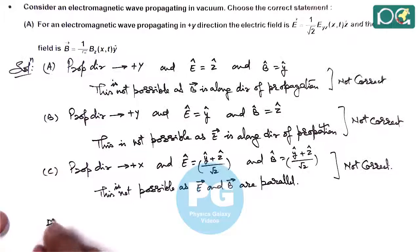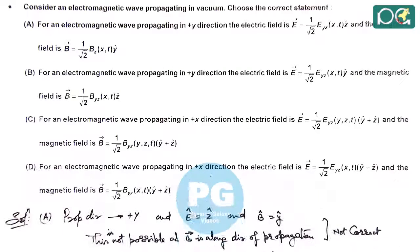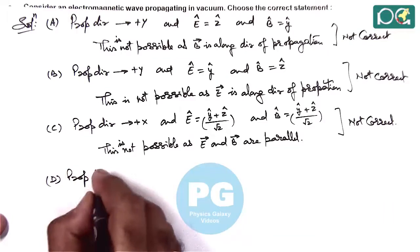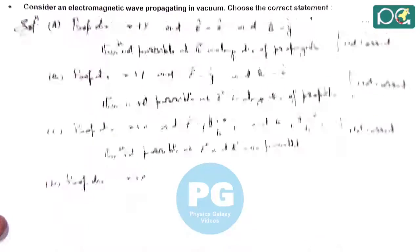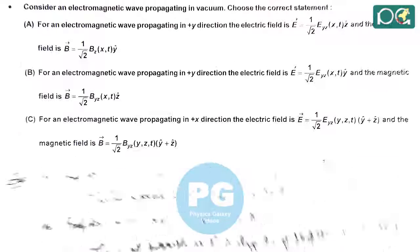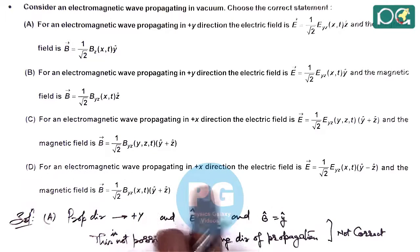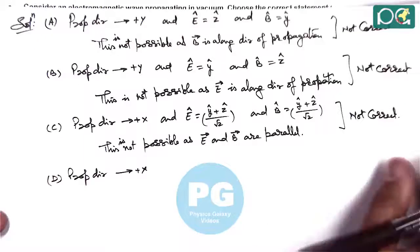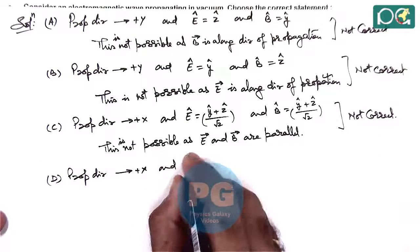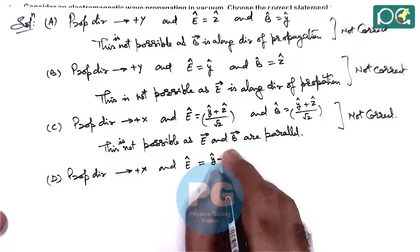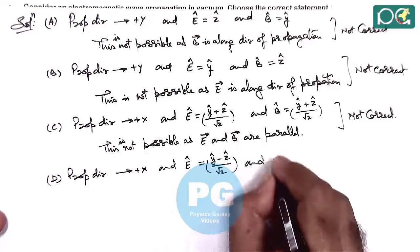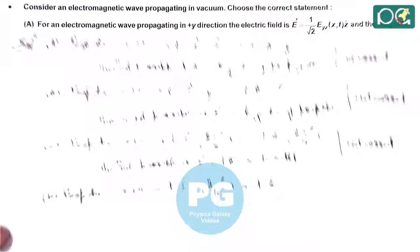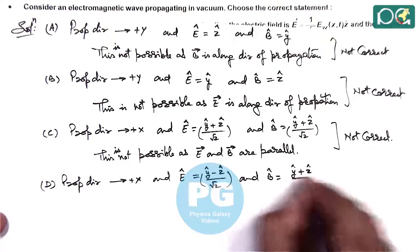So we check option D, where an electromagnetic wave is propagating in the plus x direction. The propagation direction is plus x. Obviously this should be correct since the first three options are wrong, but we will still analyze it for conceptual understanding. The direction of the electric field is along (y - z), so the electric field unit vector is (y-cap - z-cap) / √2. The magnetic field unit vector is along (y-cap + z-cap), so it is (y-cap + z-cap) / √2.